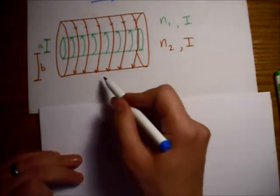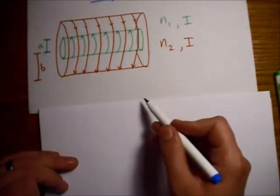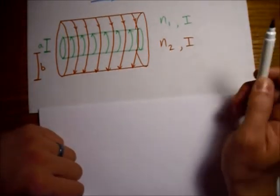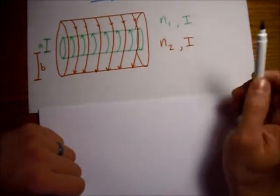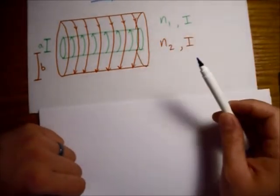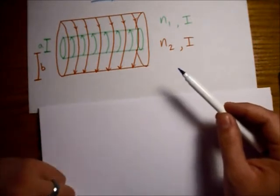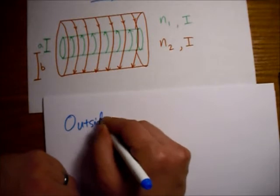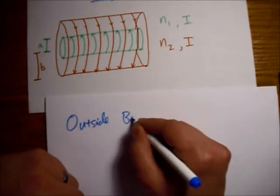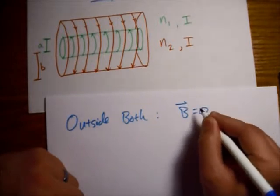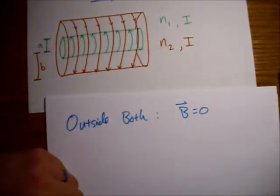How about way out here on the outside? Well, since the field outside a long solenoid is effectively zero, there is no field contribution from the red and no field contribution from the green. So let's write outside both: B is equal to zero. So that's nice and easy.